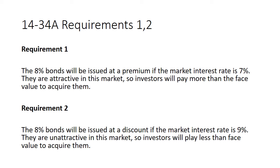On January 1, 2018, Nurses Credit Union issued 8% 20-year bonds payable with a face value of $600,000. The bonds pay interest twice a year, on June 30th and December 31st. If the market interest rate is 7% — lower than the bond's stated rate — the bonds will sell at a premium, because these bonds pay more interest than similar bonds in the market. They'll sell above their face value.